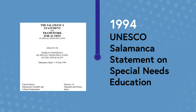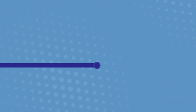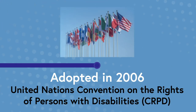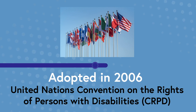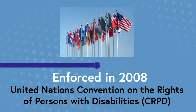However, while the Salamanca Statement was successful in raising awareness of the concept of inclusion, inclusive education was not clearly defined and many imitations emerged. In 2006, the Convention on the Rights of Persons with Disabilities — the CRPD — was adopted by the United Nations and came into force in 2008. It protects the rights and dignity of people with disability and has eight guiding principles, including respect for dignity and autonomy, non-discrimination, participation and inclusion, equality of opportunity and accessibility.